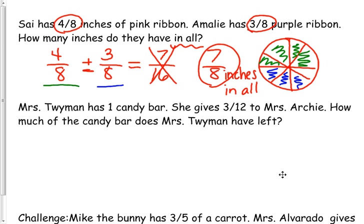Okay, how about number 2? Ms. Twyman has one candy bar. She gives 3/12 to Ms. Archie. How much of the candy bar does Ms. Twyman have left? You need to know that Ms. Twyman gives 3/12 to Ms. Archie, and she has one whole candy bar. You said the word 'gives' — what does that tell us we need to do? It tells us that we have to subtract.